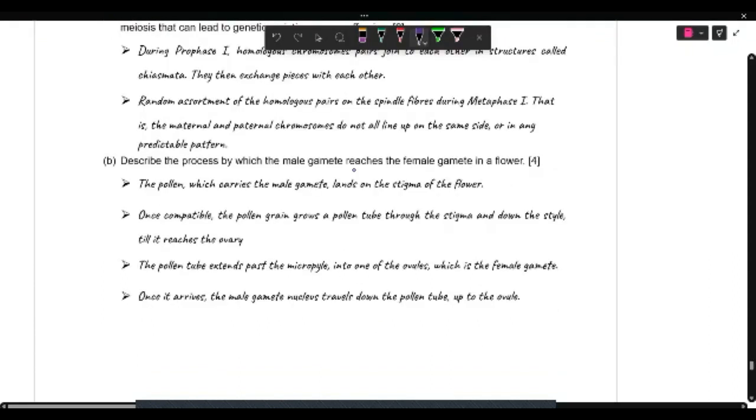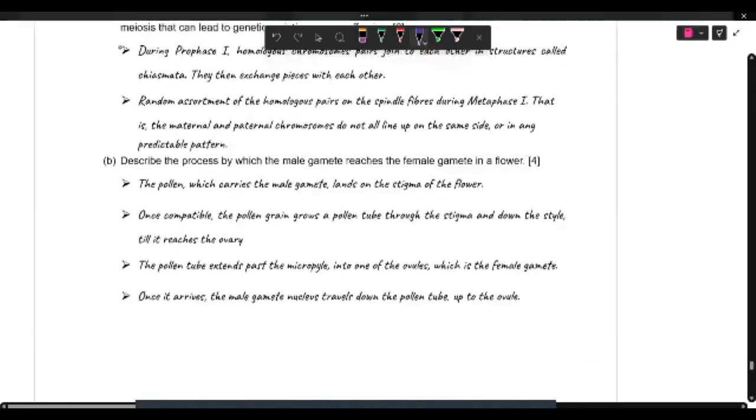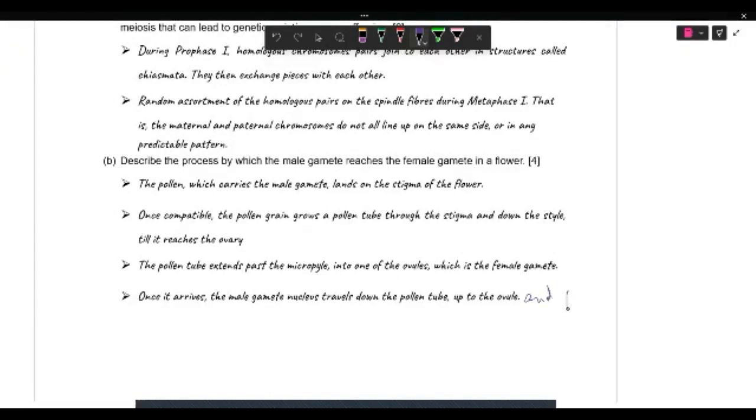Describe the process by which the male gamete reaches the female gamete in a flower. So the male gamete is carried in the pollen grain. And that pollen lands on the stigma of the flower. And once it's compatible, it grows a pollen tube down the style, gets into the micropile. And then the male gamete in a class travels down the pollen tube into the ovule and fertilizes it.